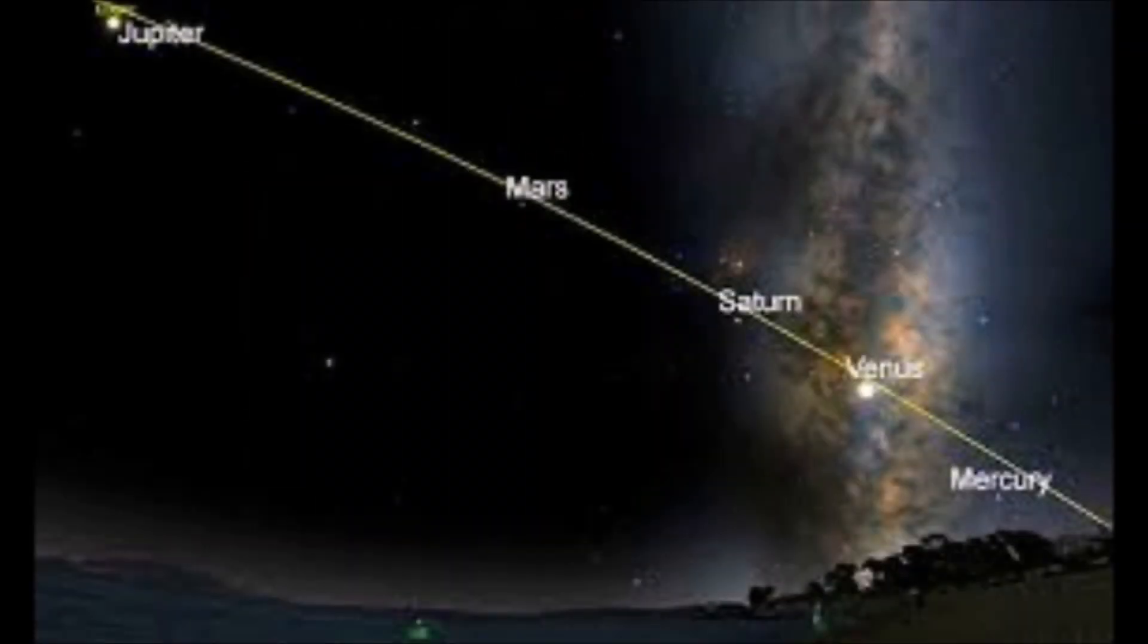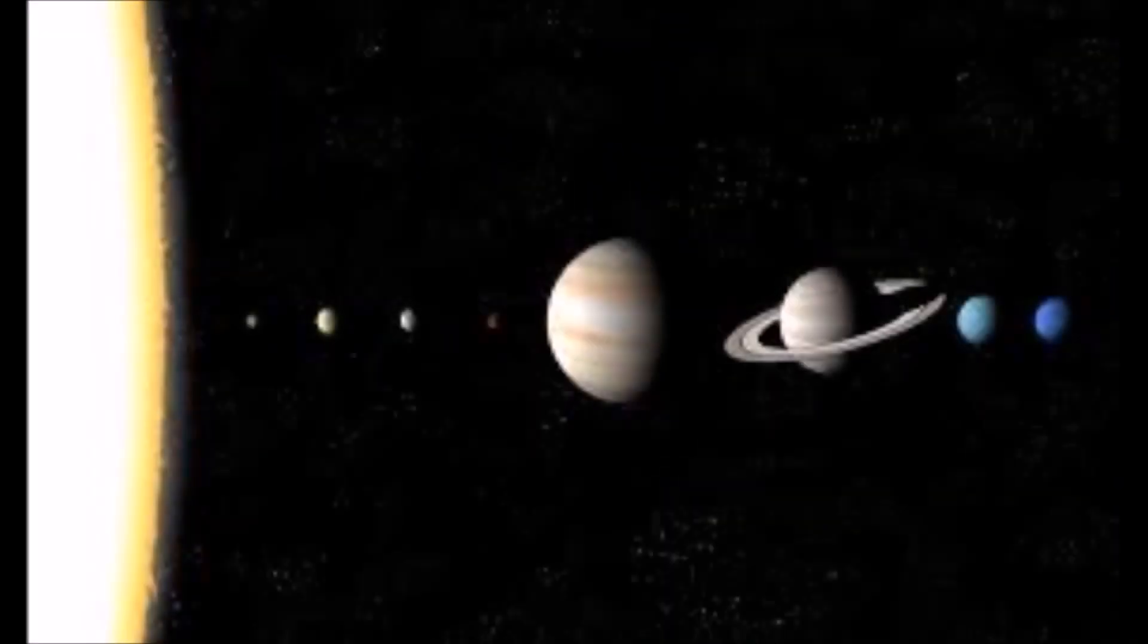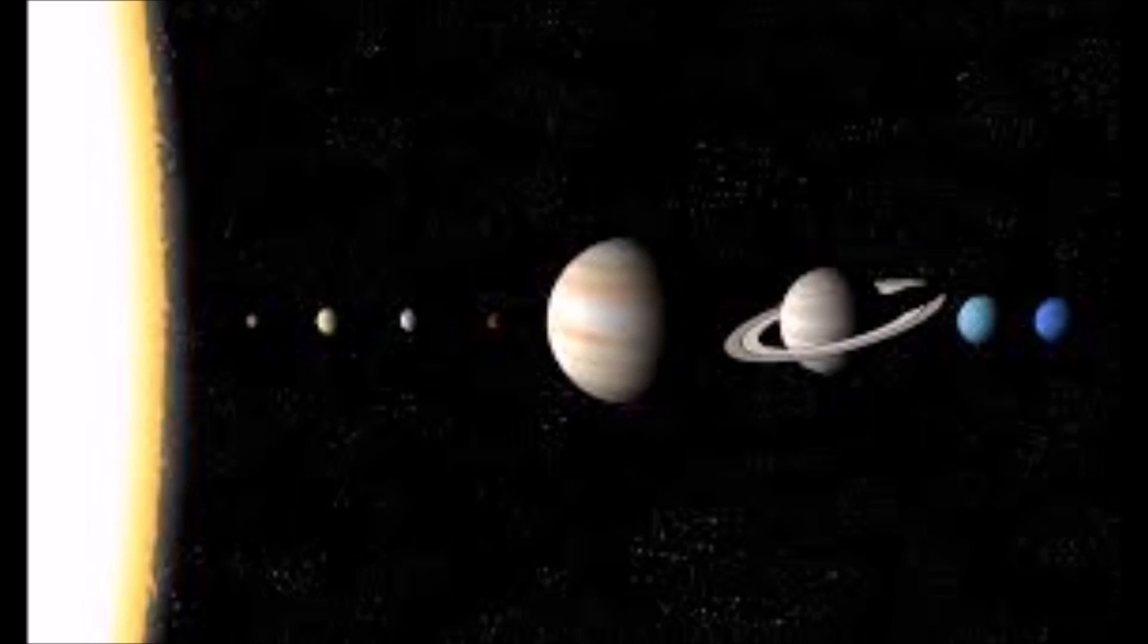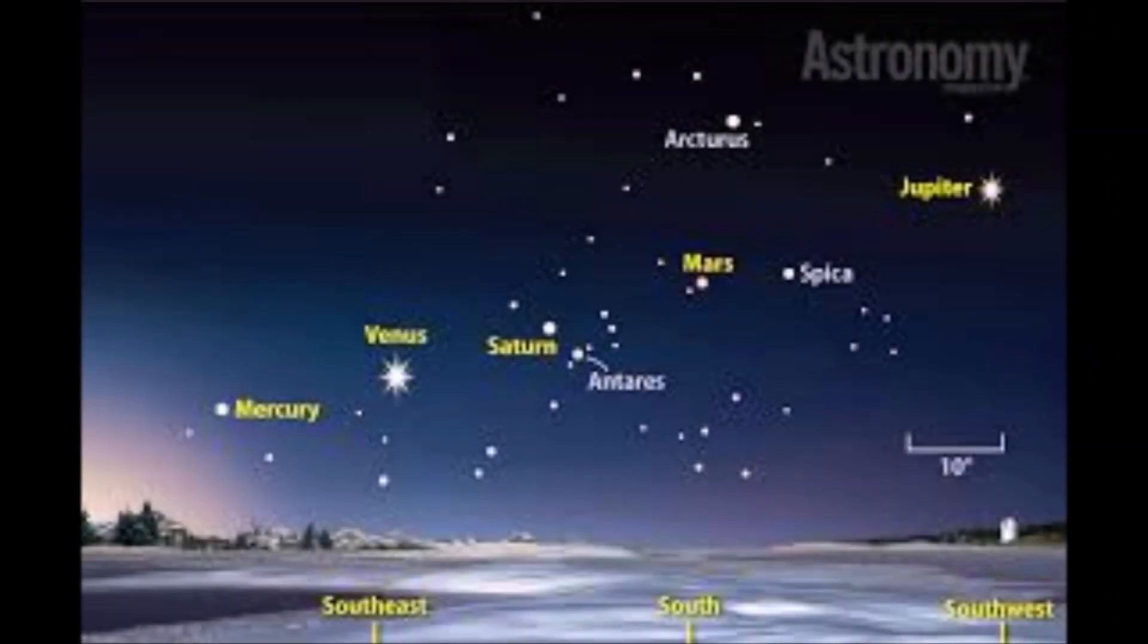The five planets have been doing a dance in the night sky over the past few months. Back in July they also came together in the evening sky but on that occasion they were stretched across the sky. Mercury and Venus could be found in the west while Jupiter Saturn and Mars were rising in the east.